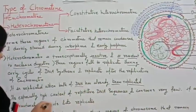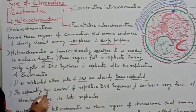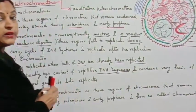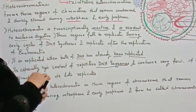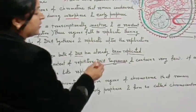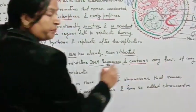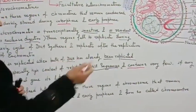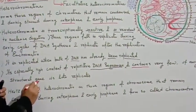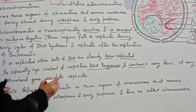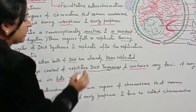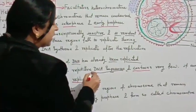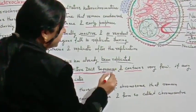Heterochromatin is replicated when the bulk of DNA has already been replicated. It has a specially high content of repetitive DNA sequences and contains very few structural genes.